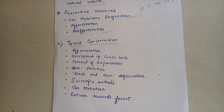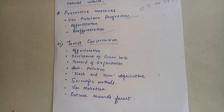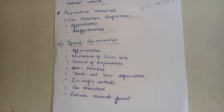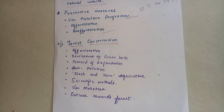Deforestation for the sake of agriculture should be banned. In 1974, the women of Reni protested against the felling of trees. They threatened to hug the trees if they were cut down. Shifting cultivation or slash and burn types of agriculture should be gradually banned.